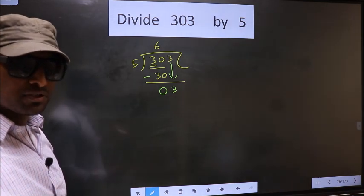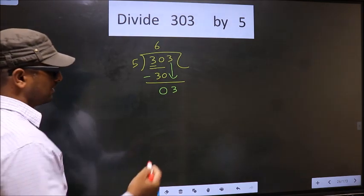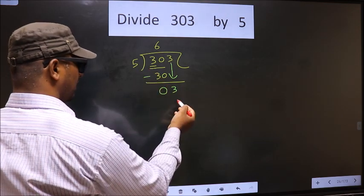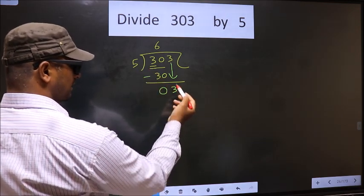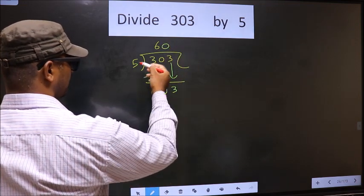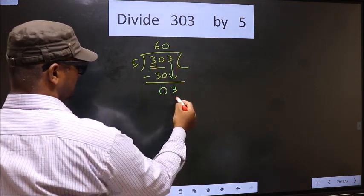Instead, what you should think of is what number should we write here. If we write 5 here, that is larger than 3. So what we do is we take 0 here. So 5 times 0 is 0.